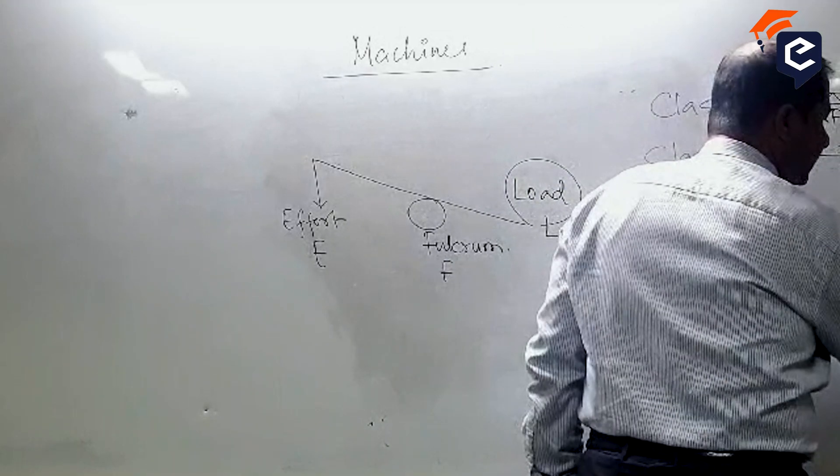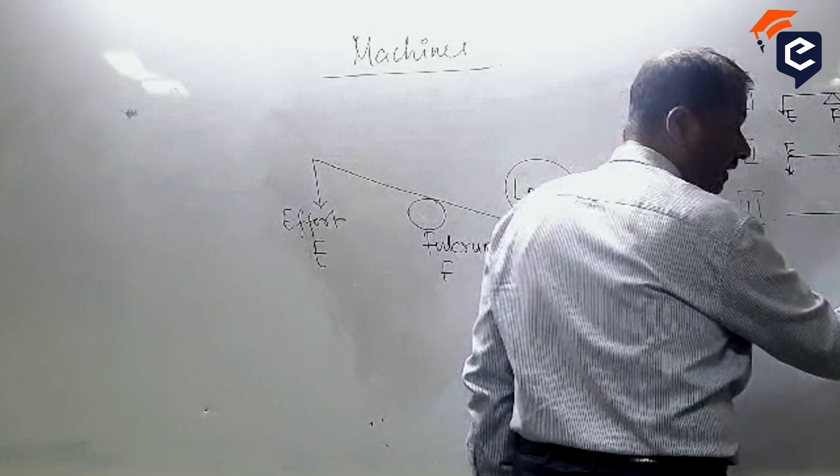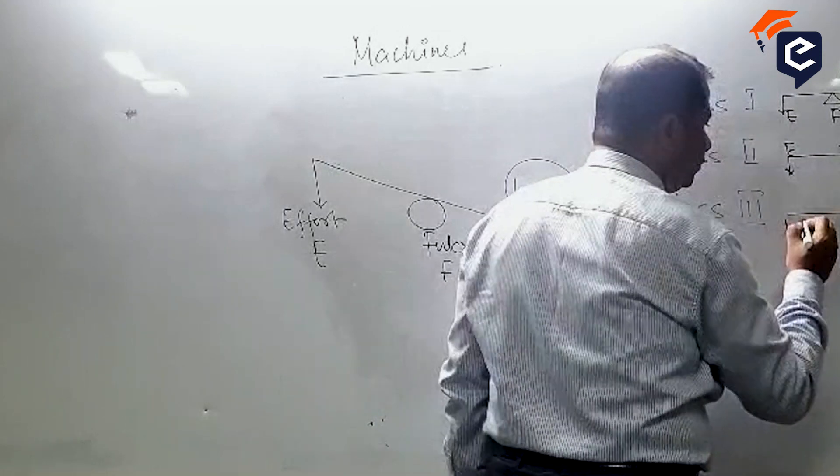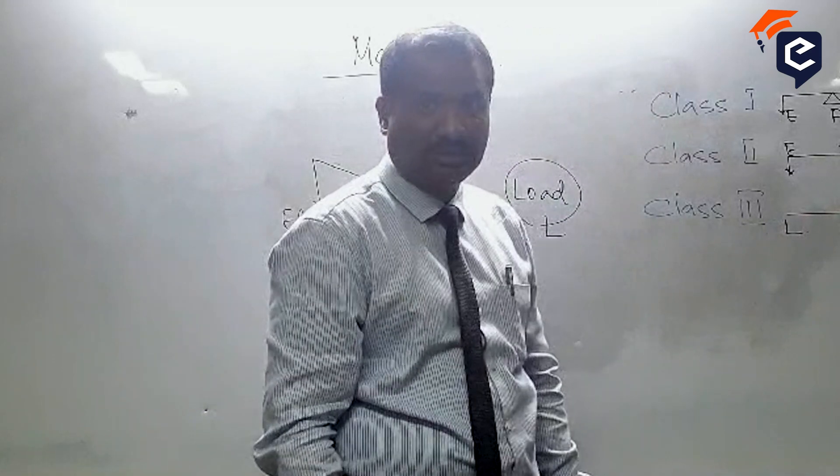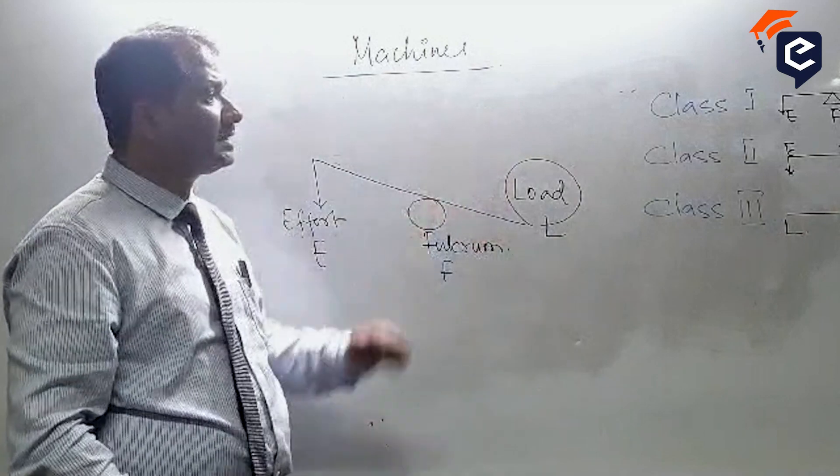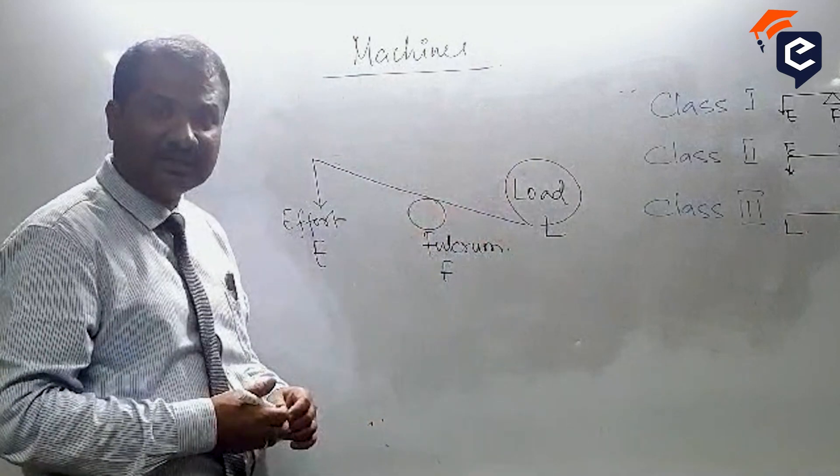Fulcrum is in the corner, effort is in the center, and load on the other corner. This is what the different classes of levers are.